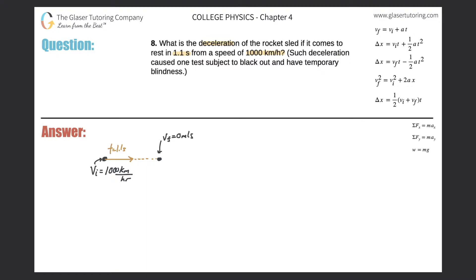Sounds like fun. So here's a picture. This dot here will represent the rocket ship. It's initially traveling at a velocity of 1,000 kilometers per hour. Eventually then, over a certain distance, it will come to rest. So its final velocity here will be zero meters per second. And the time it takes to go from this velocity to this velocity is 1.1 seconds.